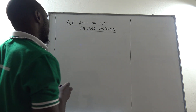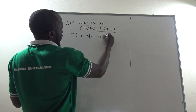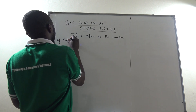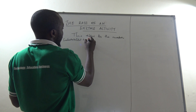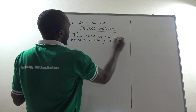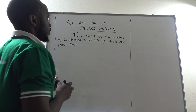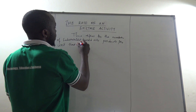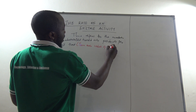So what would this mean? This refers to the number of substrates turned into products per unit time. The rate of an enzyme activity can also be called the turnover value of any enzyme.